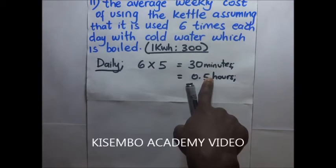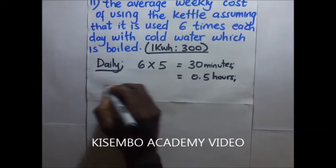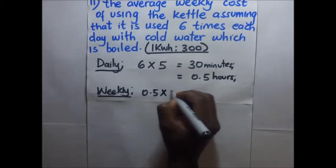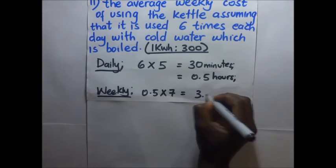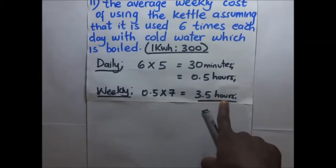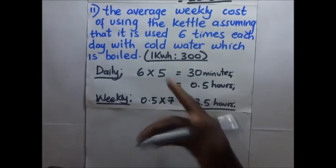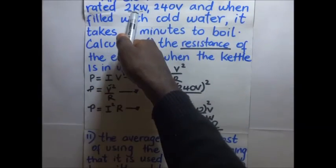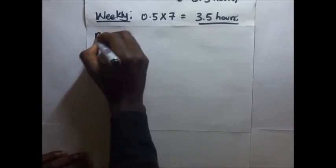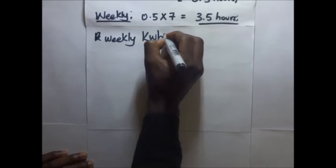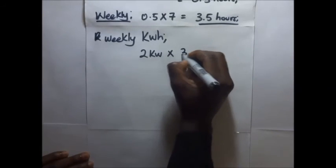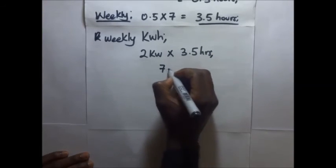If daily use is 0.5 hours, then for weekly use we multiply 0.5 hours by the 7 days of the week, giving us 3.5 hours per week. The kettle's rating is 2 kilowatts, so the weekly kilowatt hours will be 2 kilowatts multiplied by 3.5 hours, which gives us 7 kilowatt hours.